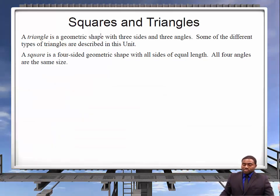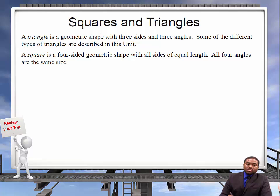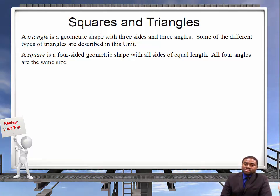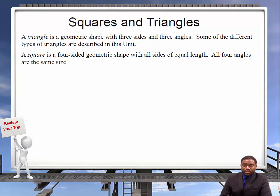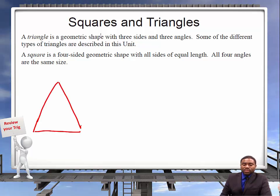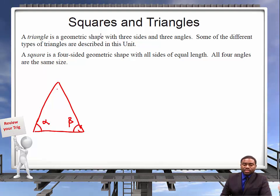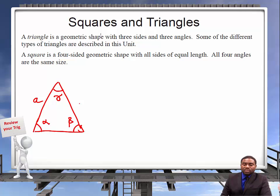Now let's talk about triangles. A triangle is a geometric shape with three sides. The angles and the lengths may be different. For example, we have a triangle with angles alpha, beta, gamma, and sides A, B, C.